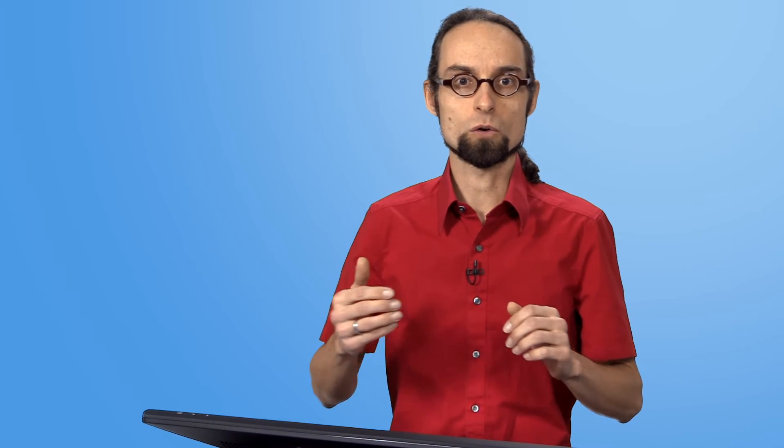Rayleigh waves in the earth are also dispersive, but body waves are not. Let's return to the audio example we heard in the beginning. Dispersion is indicated by the fact that we first hear the low and then the high-pitched tones of the surface waves.